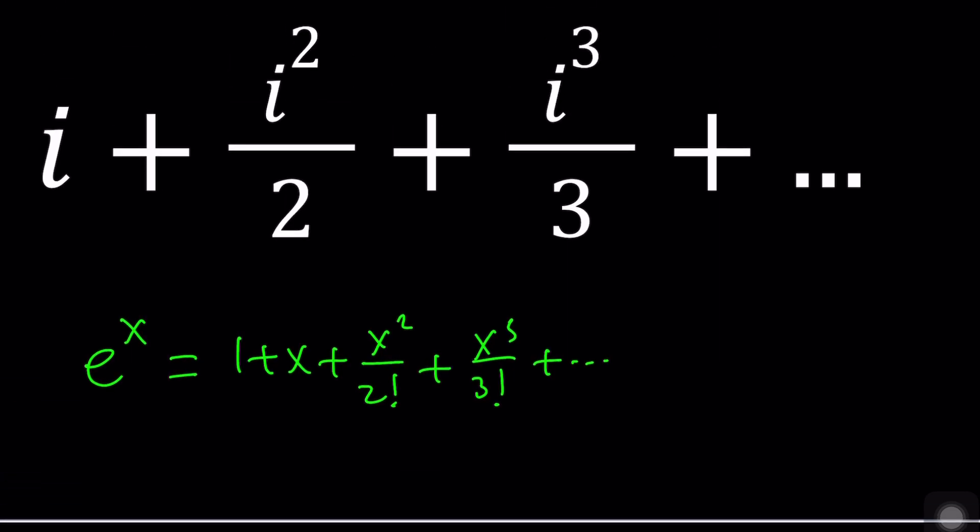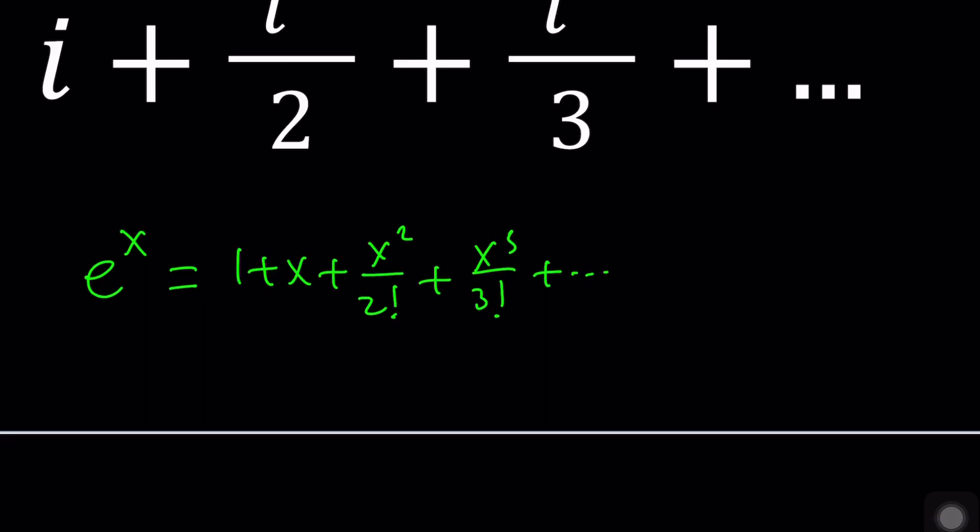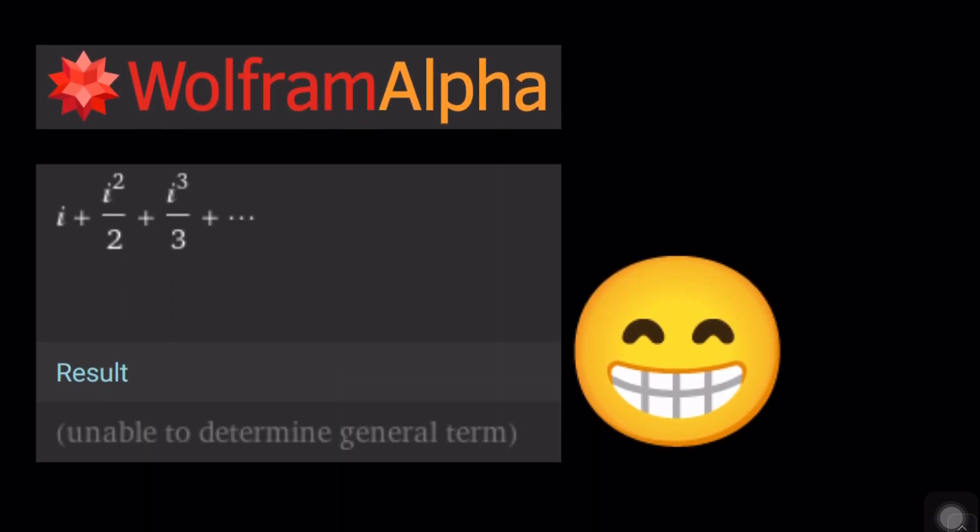Unable to determine the general term. You can blame my prompt if you want. When I gave Wolfram Alpha this, it was unable to determine the general term. And I mean that's okay because it's just artificial intelligence or a large language model. It's not a human being, obviously. So anyways, let's go ahead and see how we can variablize this.